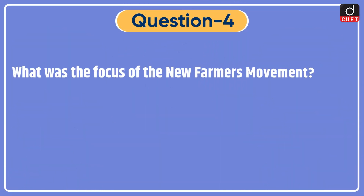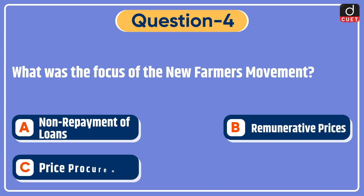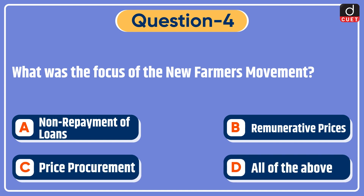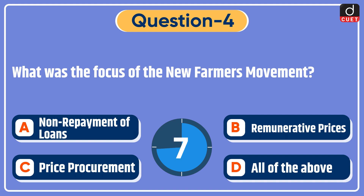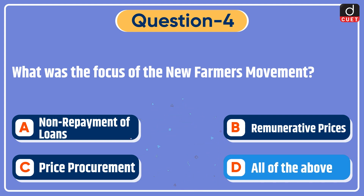Next question: what was the focus of the new farmers movement? Non-repayment of loans, remunerative prices, price procurement, or all of the above? The correct answer is option D, all of the above.